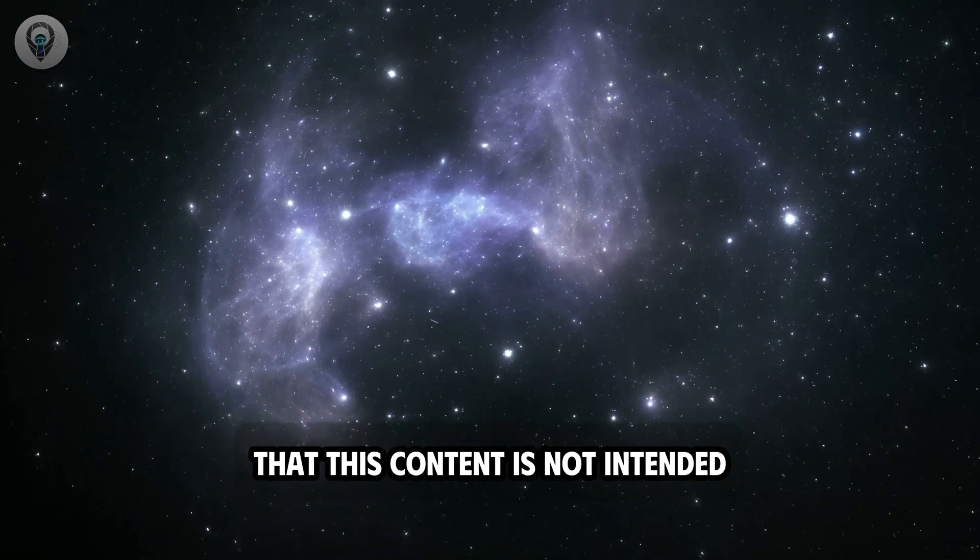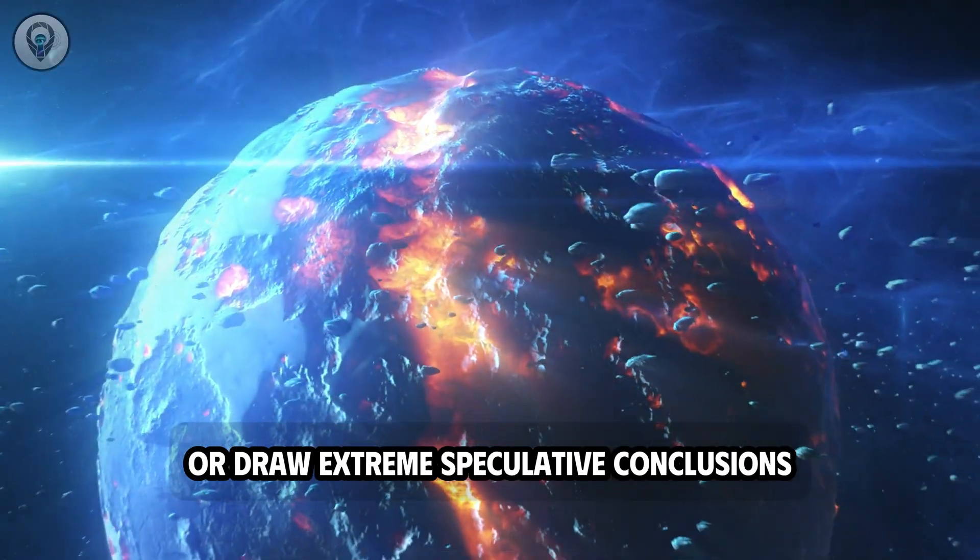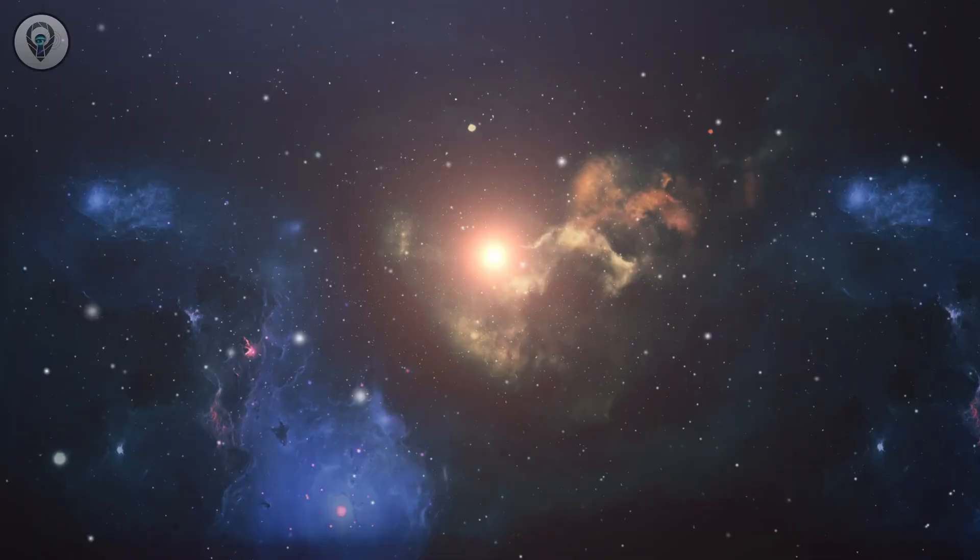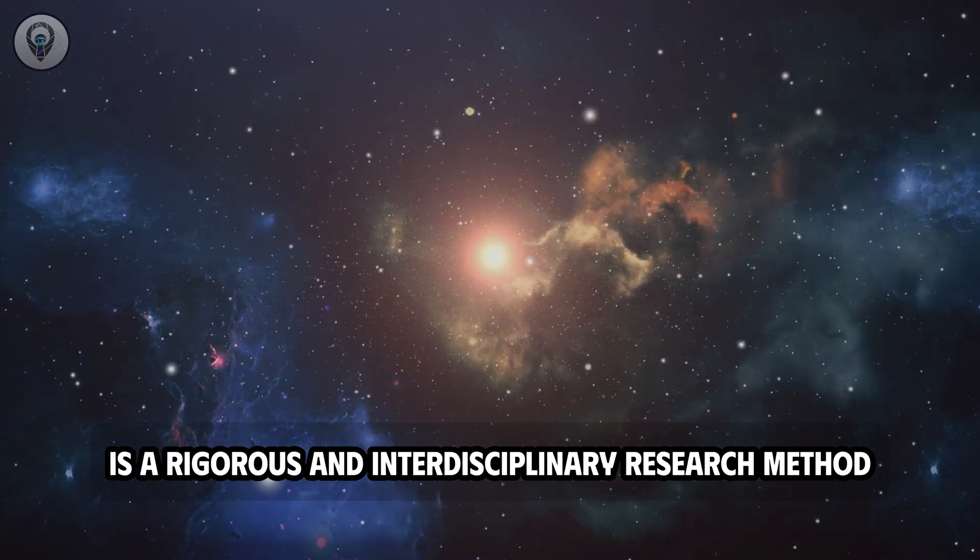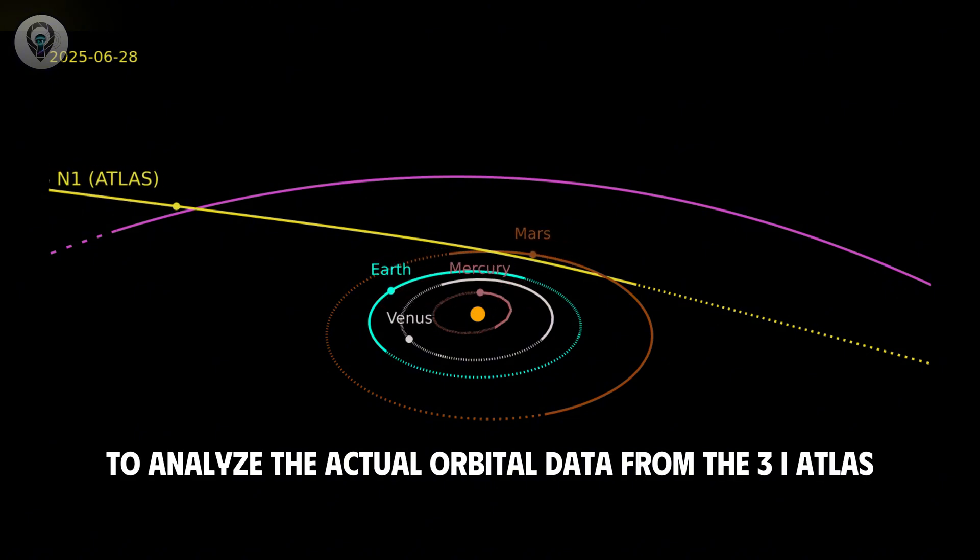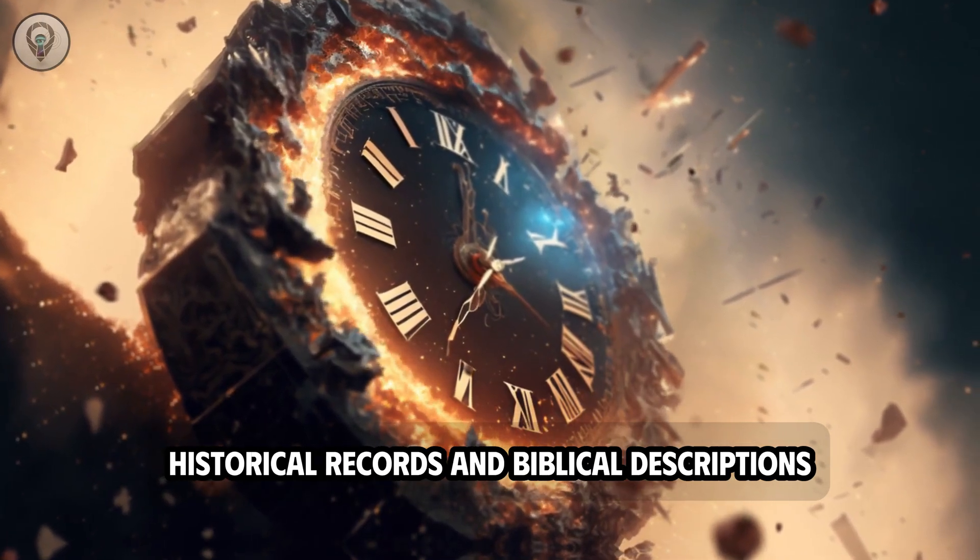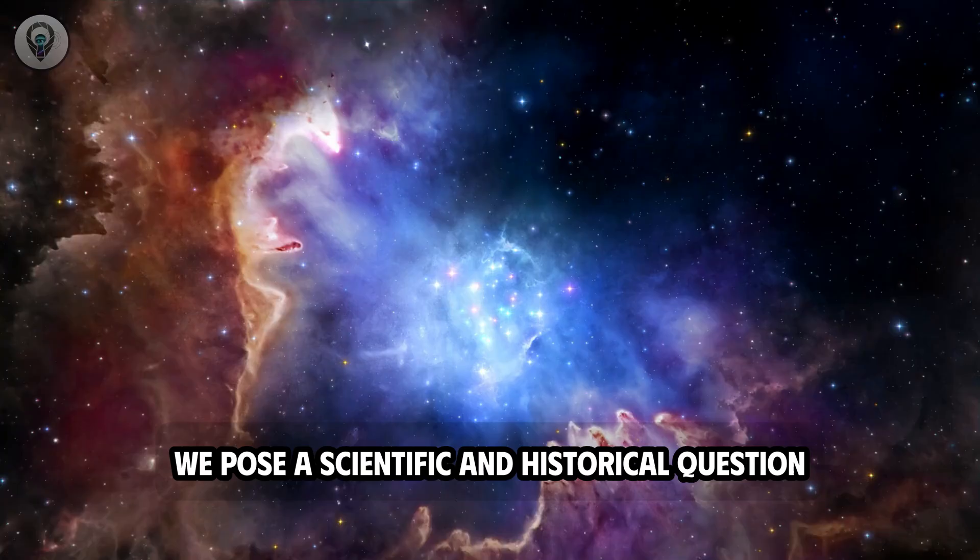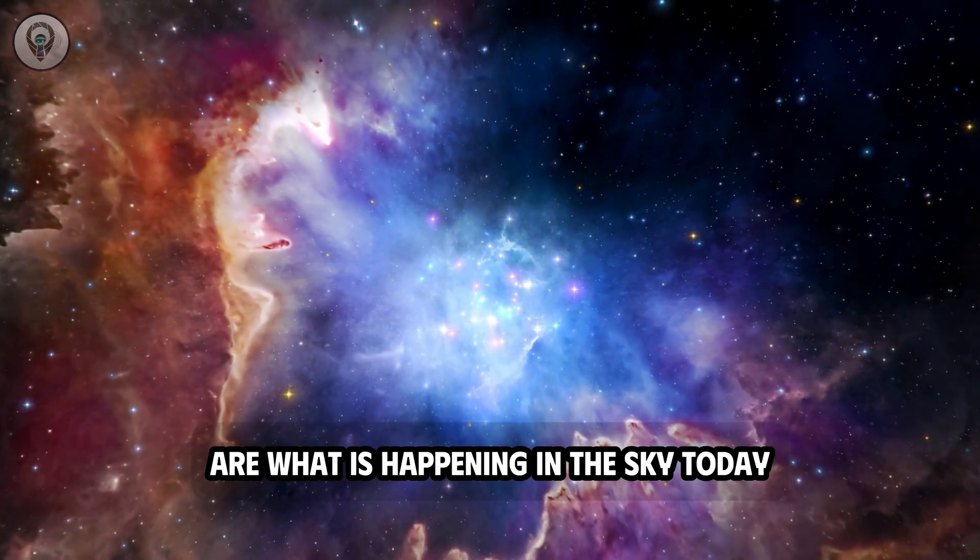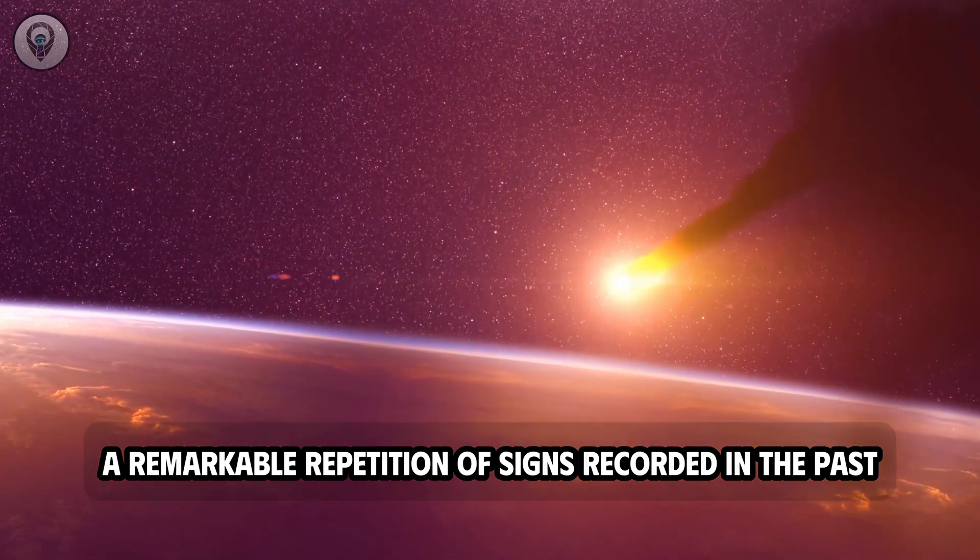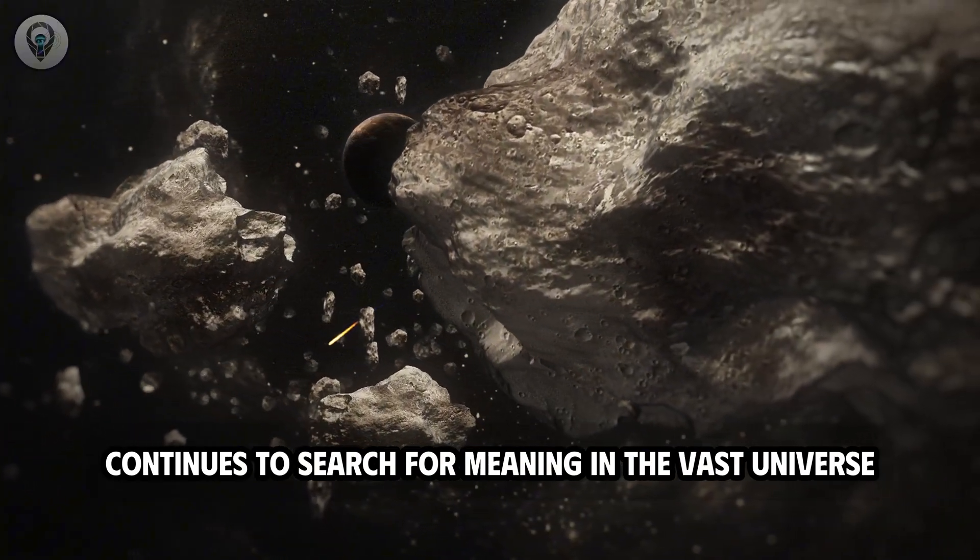However, it is important to clarify that this content is not intended to predict the end of the world or draw extreme speculative conclusions. The approach chosen here is a rigorous and interdisciplinary research method. By working with astronomers to analyze the actual orbital data from the 3i Atlas and placing this phenomenon alongside ancient historical records and biblical descriptions, we pose a scientific and historical question. Are what is happening in the sky today a remarkable repetition of signs recorded in the past, or simply the way modern humanity continues to search for meaning in the vast universe?